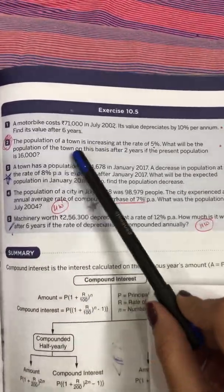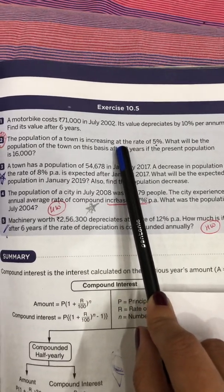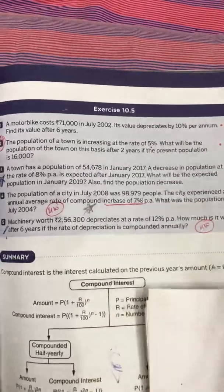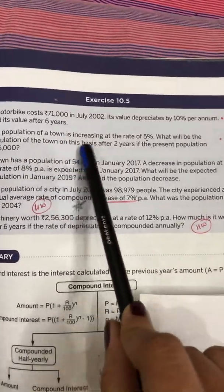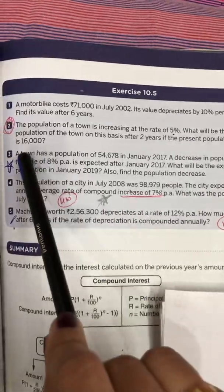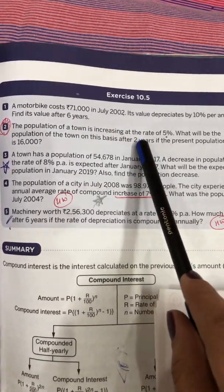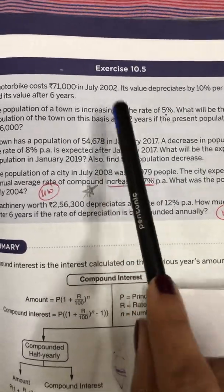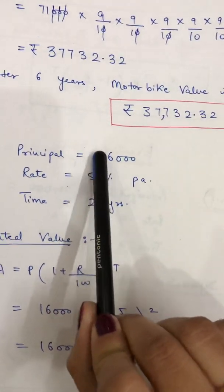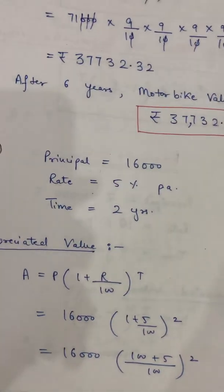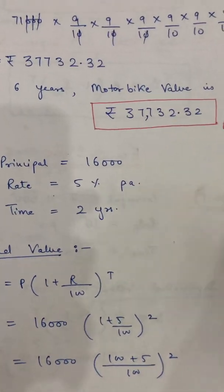Next question: The population of a town is increasing at the rate of 5% per annum. What will be the population after two years if the present population is 16,000? Time, rate, and principal are all given. Since the population is increasing, use the appreciated formula. Write Principal = 16,000 people — no need to write rupees since this is population.